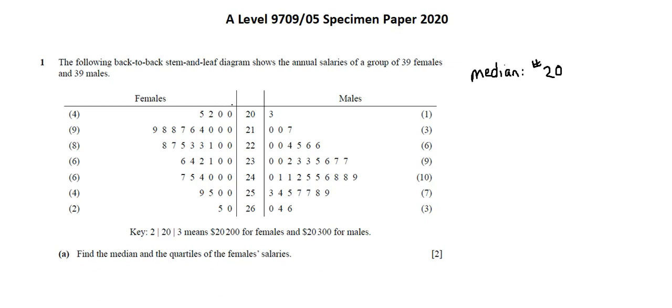We'll go over and look at the female part of the stem and leaf diagram. The females are to the left of the central column. So, we're going to count from right to left looking for female number 20. We have the row totals out to the left. So, we don't need to count every individual item. The first row, we see 4 females.